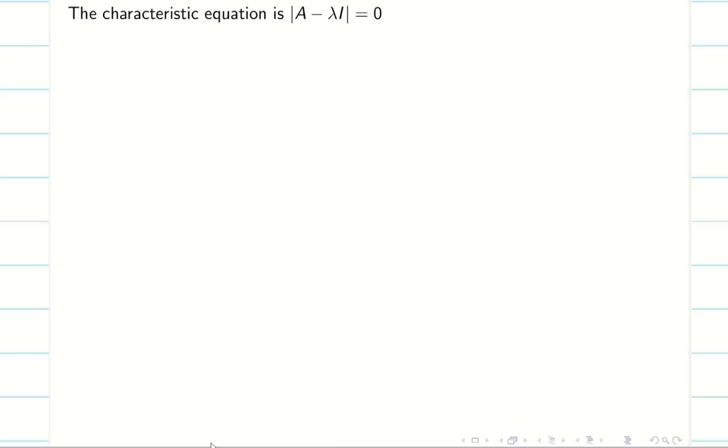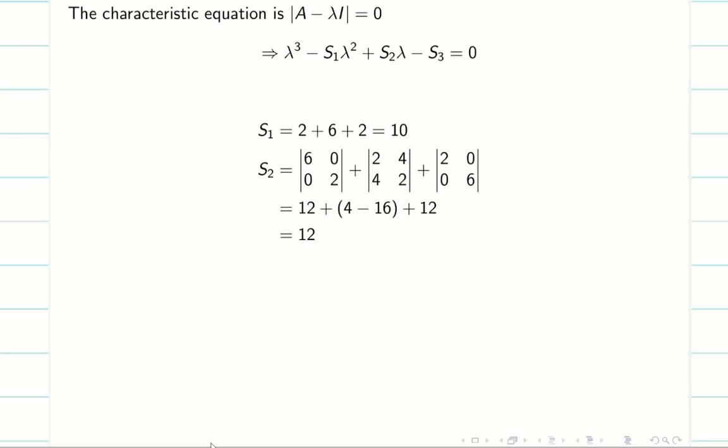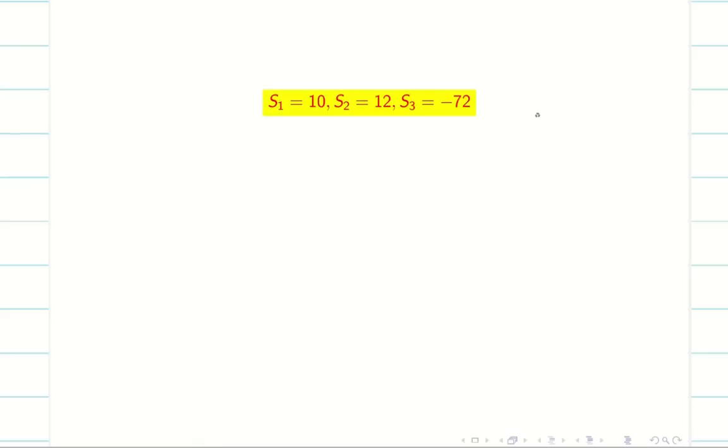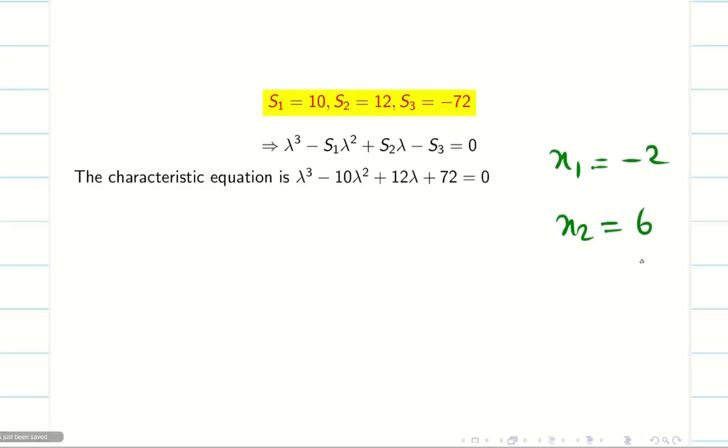Next we have to find the characteristic equation. So we did a lot of problems already in our previous videos. So I am directly calculating s1, s2, s3 here without explanations. My s1 is 10, s2 is 12 and s3 is minus 72. Now go to the calculator, find the eigenvalues. Those who don't watch, go and watch the eigenvalue shortcut tricks using calculator video. Then come back here from the playlist. Once you enter into the calculator, it will give the value x1 minus 2, x2, 6. Then it will go for A again. That means there is no third eigenvalue which is distinct. So my third eigenvalue is also 6. So my eigenvalues are minus 2, 6, 6.